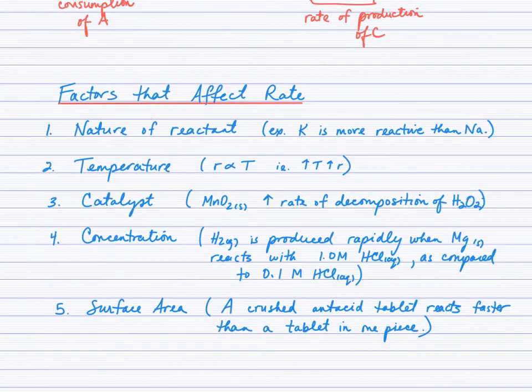The last part here, factors that affect rate. We will be studying the why behind each of these. For now, it is enough to just know the factors that affect rate and how they affect rate. We'll be studying why they affect rate in a subsequent lesson. First, the nature of the reactant. Knowing that as you go down a group of metals, the metals get more reactive. For example, potassium is more reactive than sodium as part of the nature of those alkali metals.